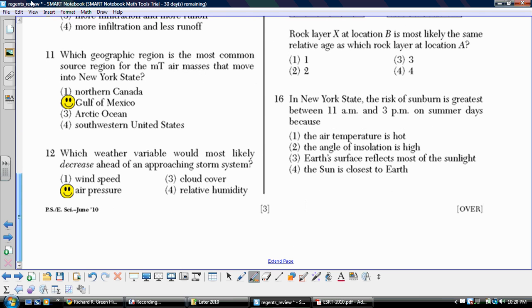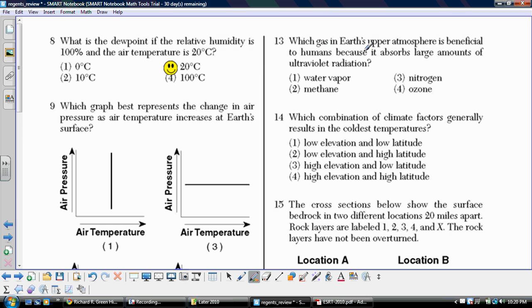Number thirteen. Which gas in the Earth's upper atmosphere is beneficial to humans because it absorbs large amounts of ultraviolet radiation? We have water vapor, methane, nitrogen, and ozone. This is largely when we talk about the danger in the past from chlorofluorocarbons and the depletion of the ozone layer. The major problem with that is that the ozone is what actually soaks up and absorbs that ultraviolet radiation, keeping us relatively protected. So ozone would be the answer there.